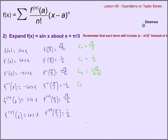The third degree coefficient will be the third derivative divided by 3 factorial. The fourth degree coefficient will be the fourth derivative divided by 4 factorial. Remember, when I write it as multiplication in the denominator, that's the same as dividing by 5 factorial. So we've got all of our coefficients.